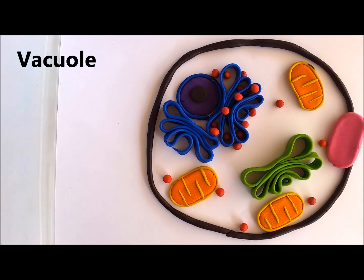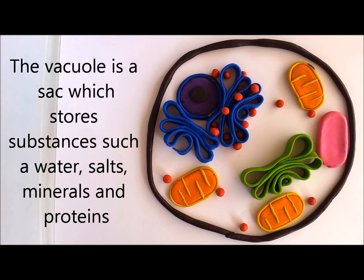Then we have the vacuole. The vacuole is essentially an empty sac which can be used for storage of different substances such as water, salts, minerals, and proteins. In animal cells, vacuoles are quite small.